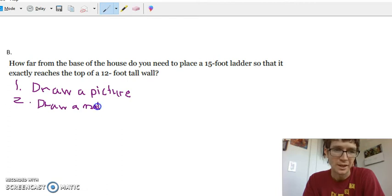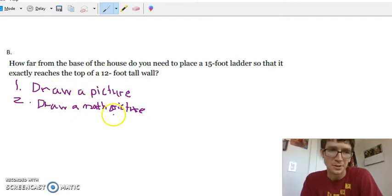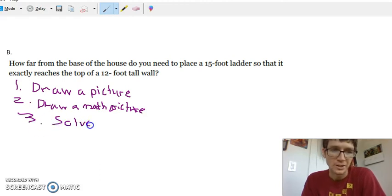So in the context of the Pythagorean theorem, you know that only applies to the right triangle. So for the second step I just mean draw your right triangle. The second one is draw a math picture and then you actually solve. So I hope that helps as a framework for working these problems.